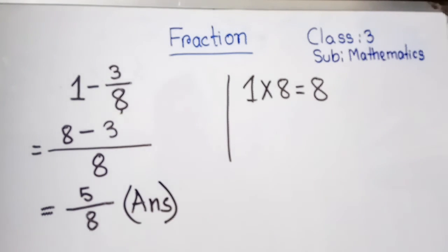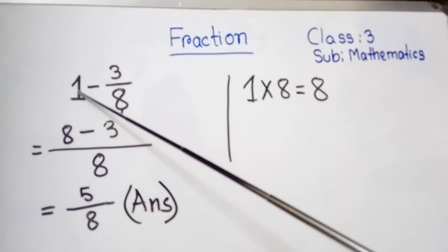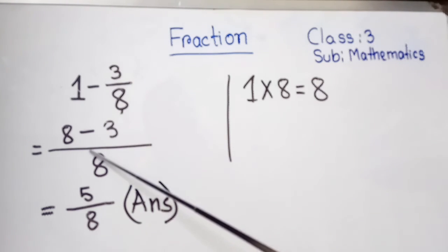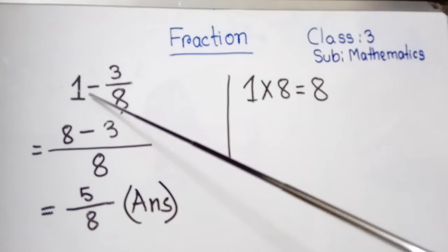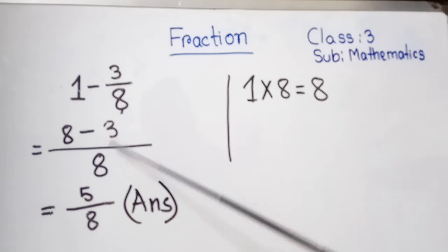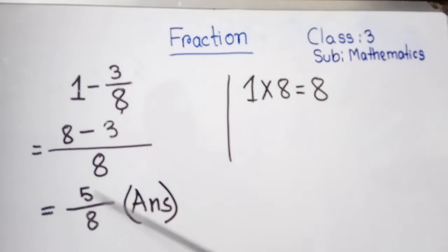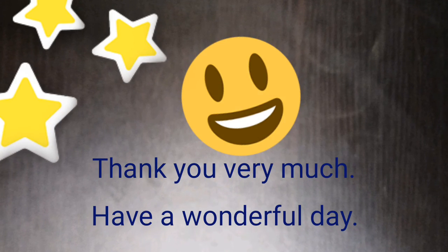Again explaining: multiply the denominator with 1, write 8 as the denominator, then 8 minus 3. Eight minus three equals five, so the final answer is 5/8.